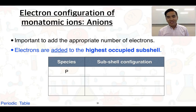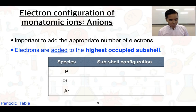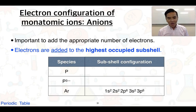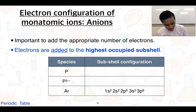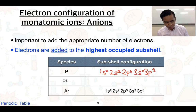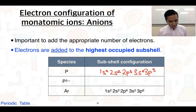We're going to have a look at phosphorus and the phosphide ion, and compare that to the electron configuration of the noble gas argon. Phosphorus is element number 15, and its electron configuration is 1s² 2s² 2p⁶ 3s² 3p³.